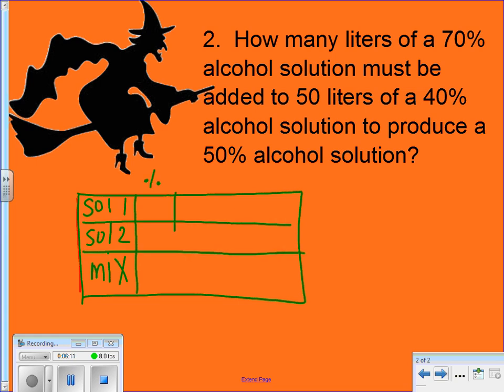Alright, let's put our percentages here and then we'll put our liters here, and then this over here will be the total that we get when we multiply these things together. So how many liters of a 70% alcohol solution? Well if this is my 70% alcohol solution and it says how many liters of that, I'm going to put an x here. Must be added to 50 liters of a 40% solution. So my second solution has a percent of 40% and I have 50 liters of that. And I want to produce a 50% alcohol solution, so my mixture needs to be 50% alcohol.